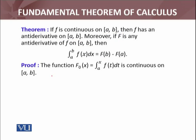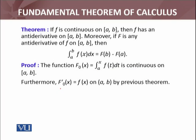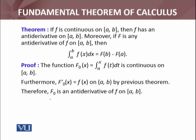The proof starts by considering the function F₀(x) defined by the integral from a to x of f(t) dt. This function is continuous — kyunke humne sabit kiya hai ke integral se jo function define kiya jaye, under certain conditions woh Lipschitz continuous hota hai. In fact, Lipschitz continuity continuity ko imply karti hai. So F₀ is continuous on [a,b]. Furthermore, the first derivative of F₀ equals f(x) on the open interval, by the previous theorem we proved. Therefore, F₀ is an antiderivative of f on [a,b].